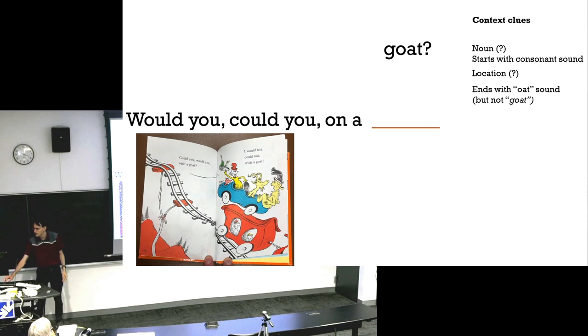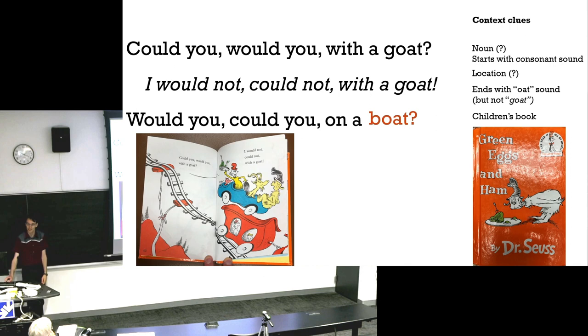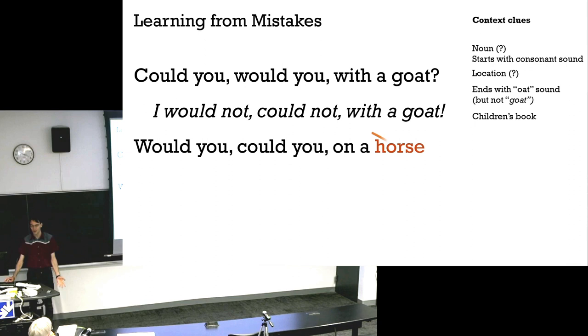So indeed, this is from my kid's copy of Green Eggs and Ham. It's a children's book. And would you, could you, on a boat? Now, of course, when you're first reading this as a child or as a language model being trained, you might make a mistake and say, would you, could you, on a horse? Well, it's a noun. It's contextually the same kind of a thing as a goat. They show up together in farm animal books all the time. But, no.